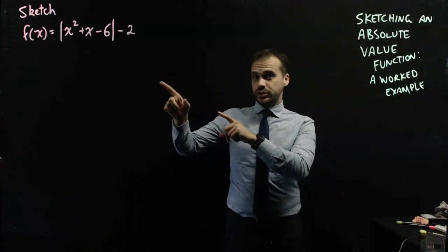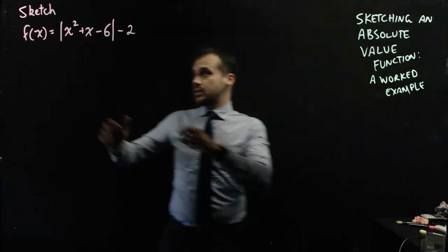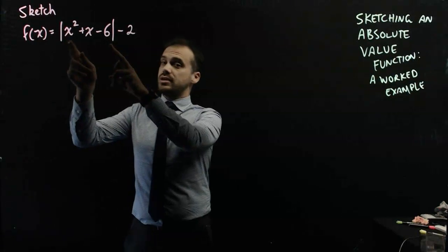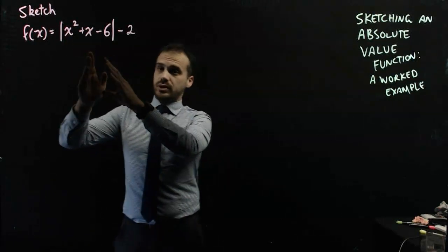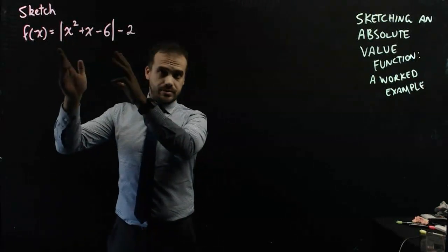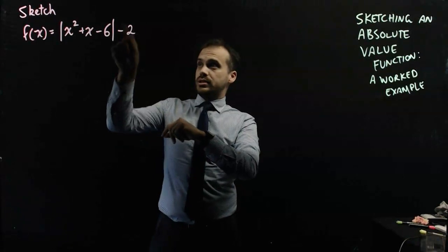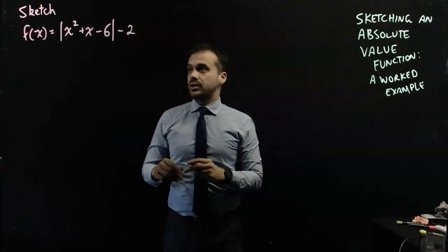Let's sketch this function. We're going to do it in three stages: we're going to sketch the thing inside the absolute value, then we're going to apply the absolute value, then we're going to deal with the vertical shift.